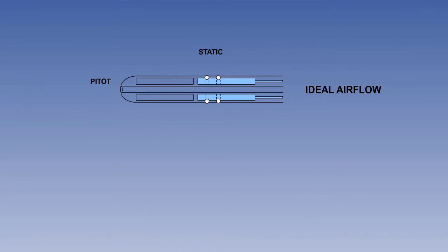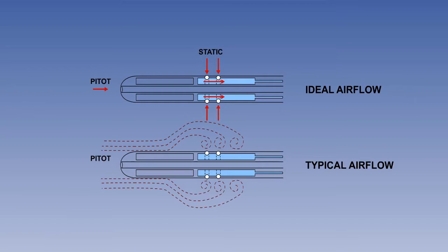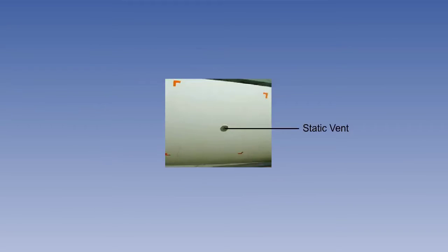Next is position error, also sometimes known as pressure error. Ideally the static pressure sensed by the instrument should be the true static pressure undisturbed by the presence of the aircraft. However, the presence of the aircraft will have an effect on the static pressure sensed and position error occurs as a result of turbulent airflow and suction around the static source. Around 90% of pressure error can be eliminated by the use of a separate static source or vent located where turbulence is minimum, usually the side of the fuselage.